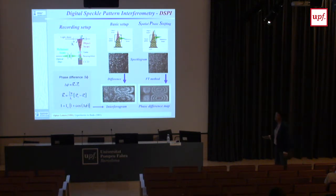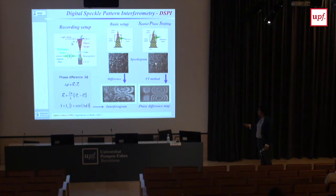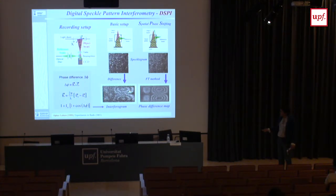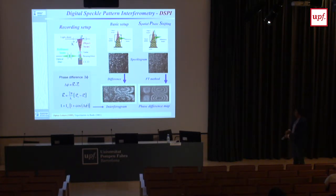With spatial phase shifting you get phase maps with sign information — black, grey, white cycling tells you whether the phase is increasing or decreasing — so you can distinguish the direction of displacement. Once filtered, there is a direct relation between gray level and phase. The phase is known modulo 2π, but by unwrapping — tracking whether the phase is continuously increasing or decreasing across the image — you can recover the full phase map. We usually plot it wrapped because it is easier to visualize.